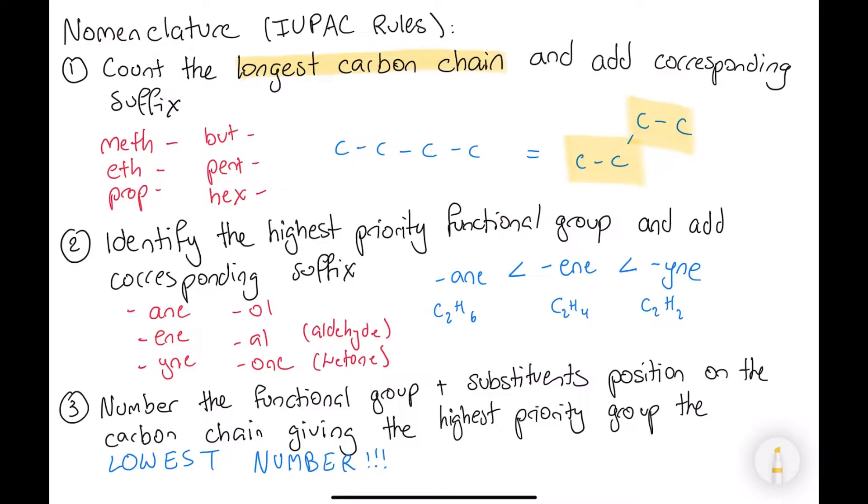The next thing you need to do is identify the highest priority functional group, as this determines the main parent name of the organic molecule. You also have to learn the corresponding suffix for each functional group. The ones we're all familiar with are alkanes, alkenes, and alkynes, and of course alcohols. I'll go over the other suffixes for the other functional groups you'll need to know.